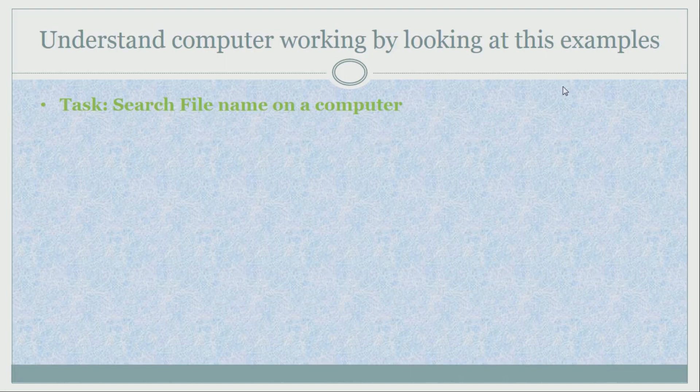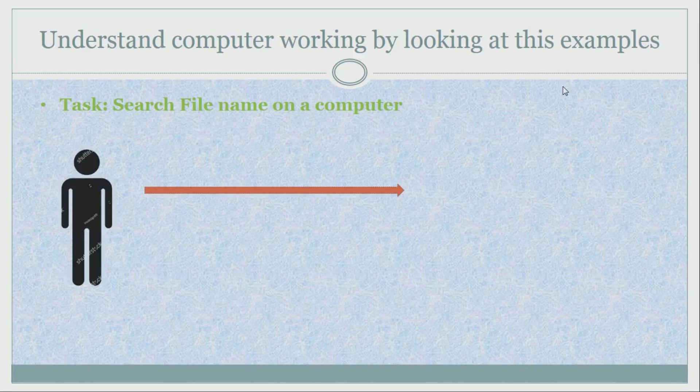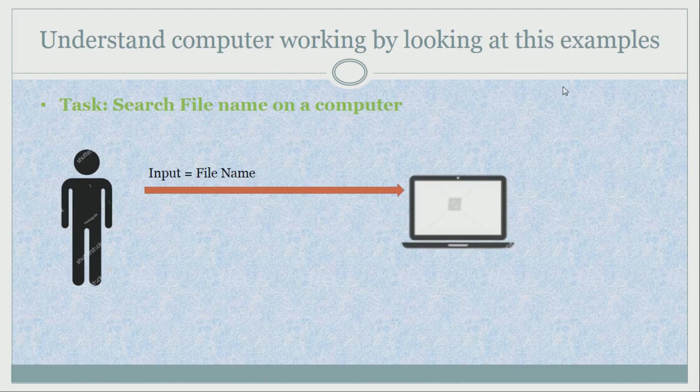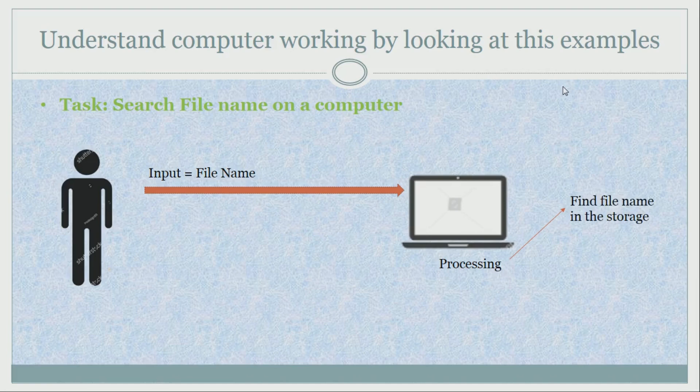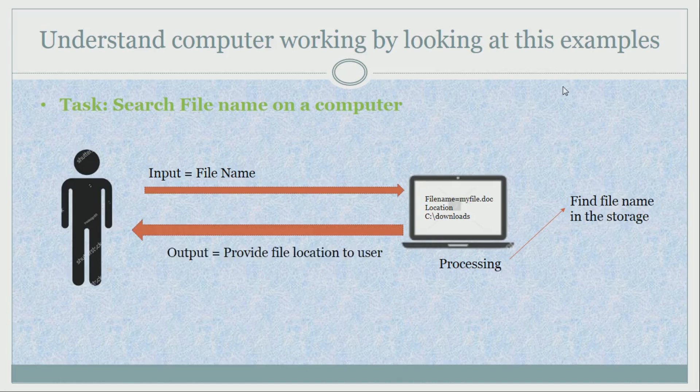Let's look at some examples to understand computer working efficiently. The first task is the file search procedure. User input is equal to the name of the file to be searched. The user asks the computer to search just like we use the window search. Computer does the processing, which in this case is to search the file on the storage, which is the hard disk. And then, the computer shows file location on the screen as an output. The user can see the file name and its location.